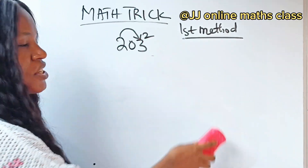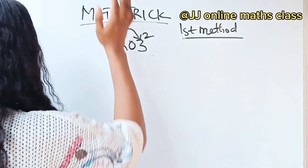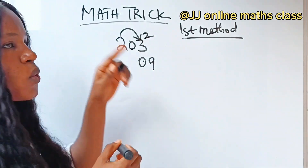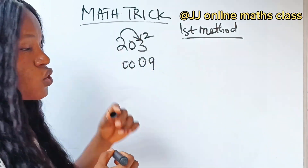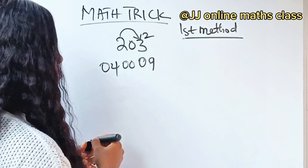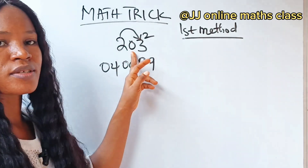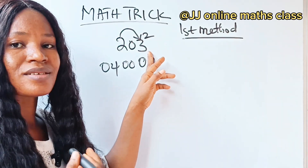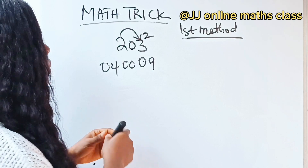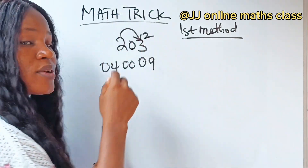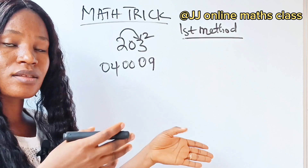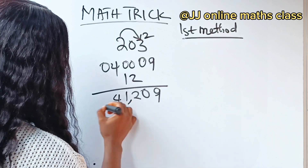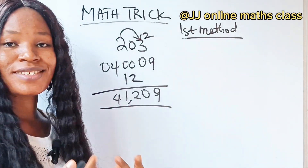Before we get to the easiest — the third method — let me explain the second method again. Three squared is nine: write zero nine. Zero squared is zero: write zero zero. Two squared is four: write zero four. Two times zero is zero, double of that is zero — neglect it. Zero times three is zero, double of that is zero — neglect that as well. But two times three is six, and double of six is twelve — we are not going to neglect that. Just write it at the center and add, and you get the result. Pretty easy.